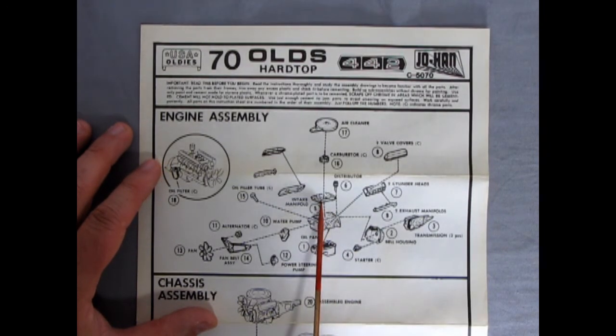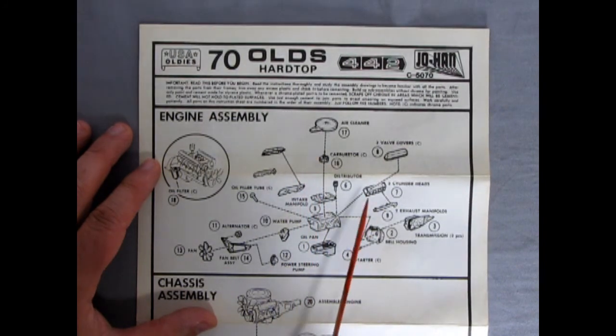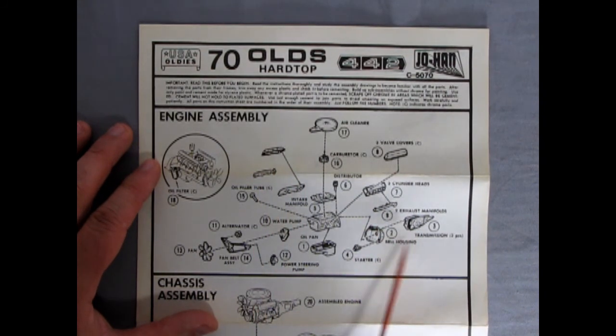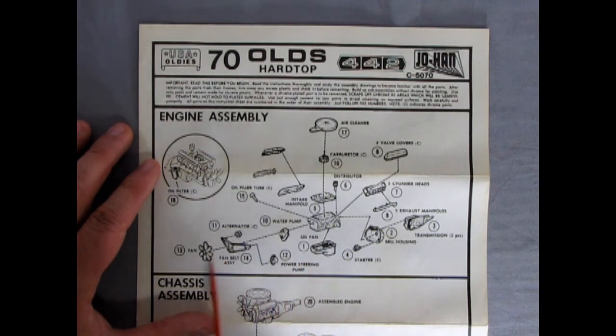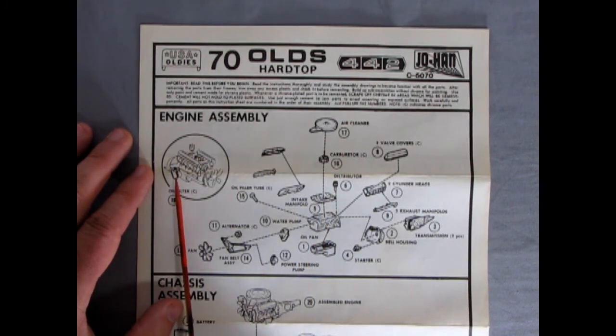You've got the intake manifold as a separate piece, carburetor, air cleaner, two cylinder heads, valve covers left and right, exhaust manifolds, two piece manual transmission gluing onto the proper bell housing with the starter, separate oil pan, fan belt alternator, power steering pump, the fan, oil filler tube which glues in the front, typical Oldsmobile distributor at the back, and then the oil filter going on the side.